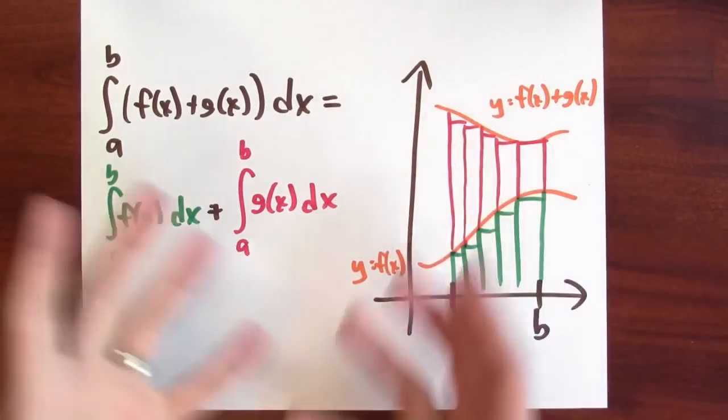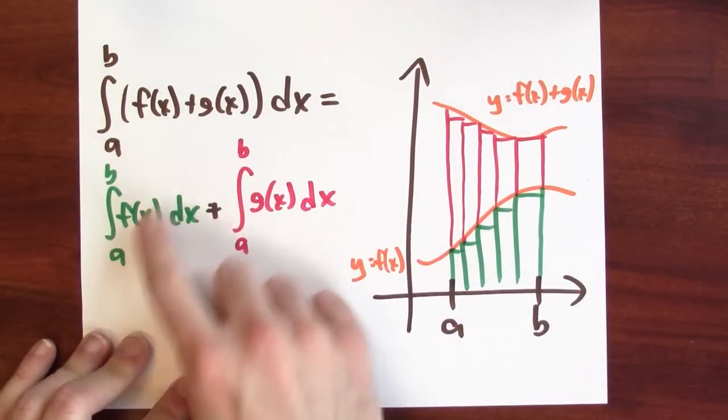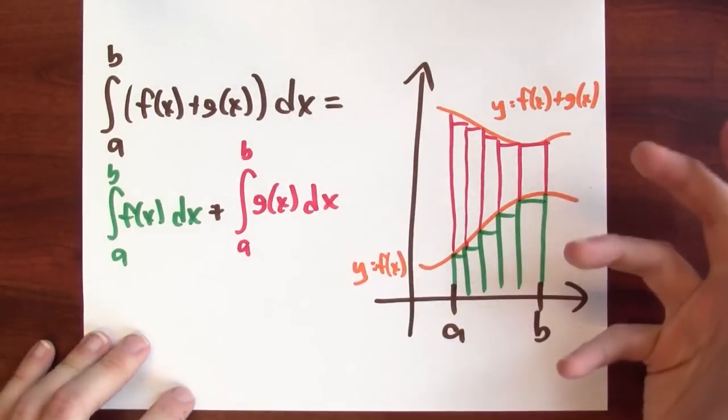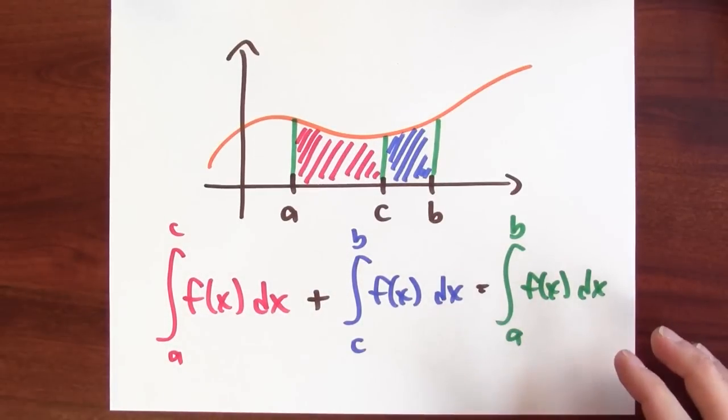So this is kind of a proof by stacking, if you like, that the integral of f plus g is the integral of f plus the integral of g. A lot of these rules have analogs for the sigma notation stuff.